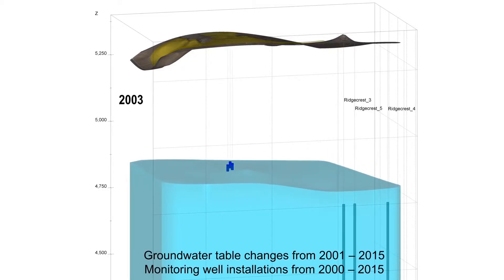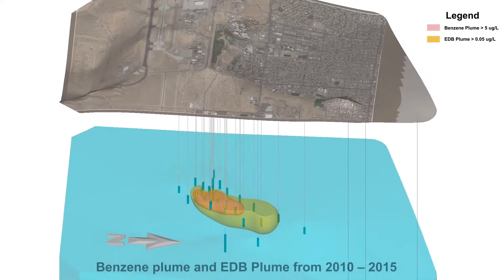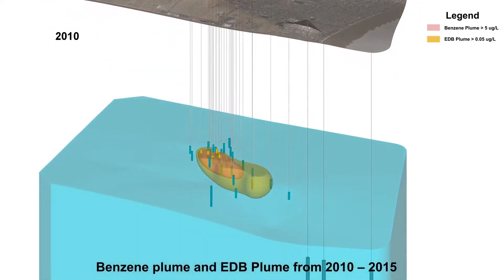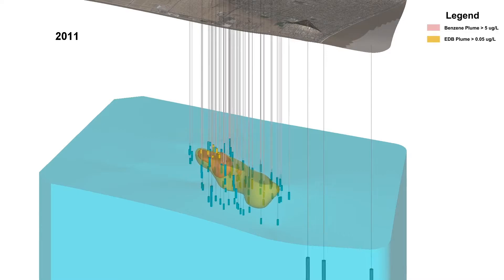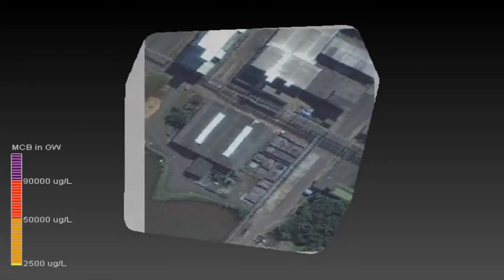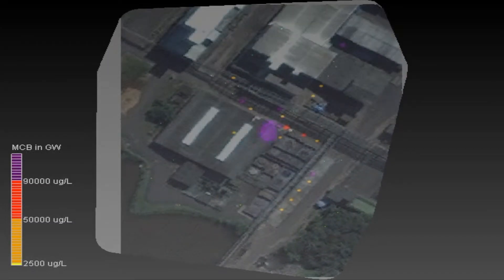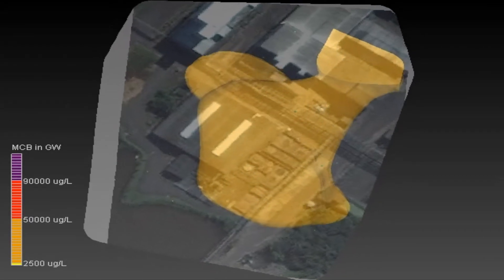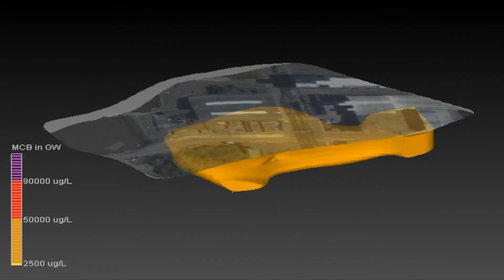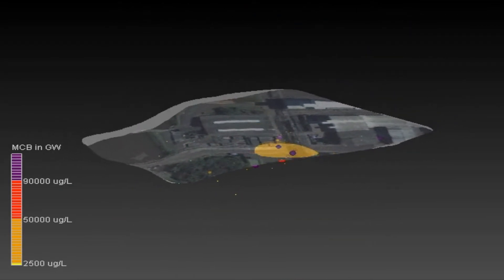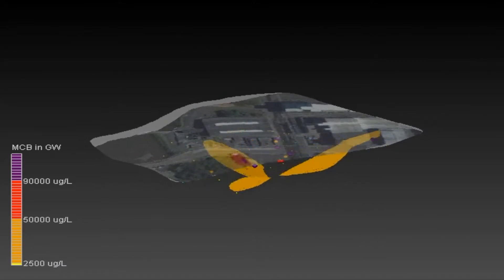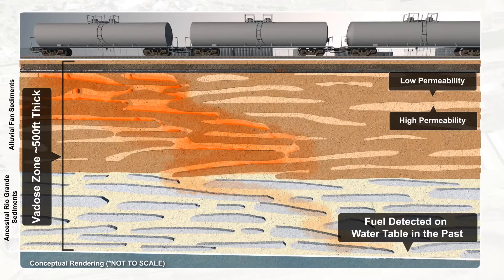We continuously sample chemical components from the entire base in groundwater, surface water, soil, soil vapors, and sediment, then enter the data into our environmental geodatabase. This provides us both spatial and temporal data patterns. Since we also get the sampling location and depth, we are able to create a 3D model with a time series.